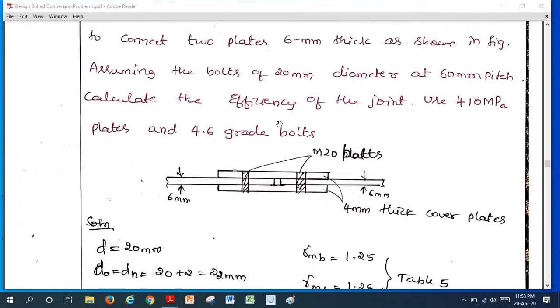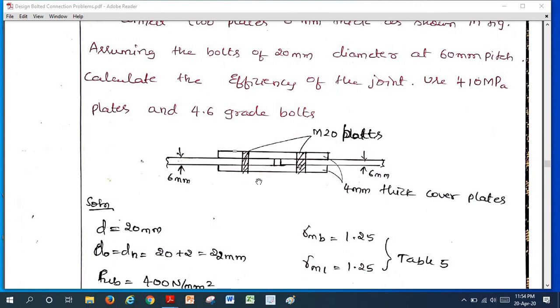In the last lap joint, we discussed around three to four problems on efficiency. We know efficiency formula that is strength of the joint to the strength of the solid plate. Strength of the joint is the least of: strength of the bolts in shear for entire joint, strength of the bolt in bearing for the whole joint, and tension failure of plate. We already know how to calculate the efficiency in detail from the lap joint problems.